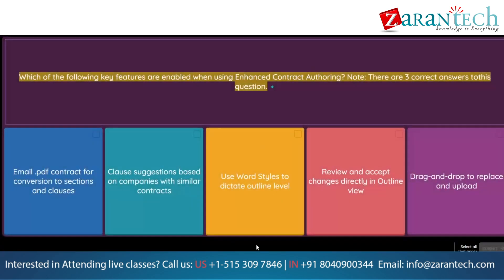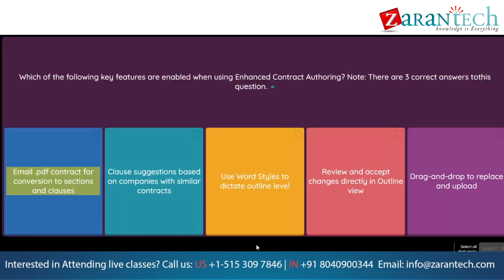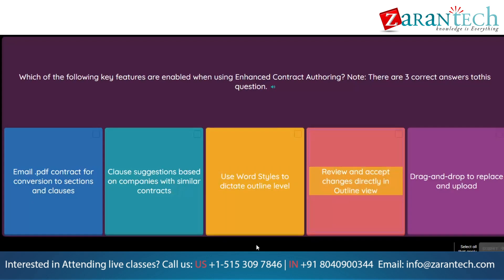Question: Which of the following key features are enabled when using enhanced contract authoring? Note: there are three correct answers. Option 1: Email PDF contract for conversion to sections and clauses. Option 2: Clause suggestions based on companies with similar contracts. Option 3: Use word styles to dictate outline level. Option 4: Review and accept changes directly in outline view. Option 5: Drag and drop to replace and upload.